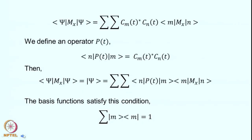We simplify the notation slightly — instead of writing U_m and U_n explicitly, we simply write m and n to indicate the eigenstates. This is just a simplification of the notation.